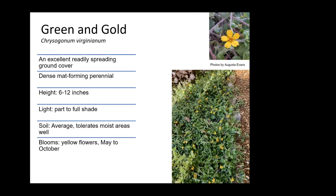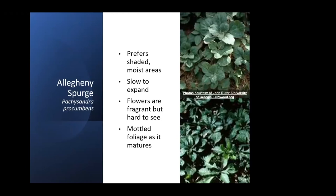Allegheny spurge can be used to replace Japanese spurge — it's our native spurge that prefers shaded moist areas. It is rather slow to expand but will gradually spread. It has flowers that can have a fragrance, even though they're hard to see, and the foliage is really nice and becomes mottled as it matures. This is a great replacement for Japanese spurge.